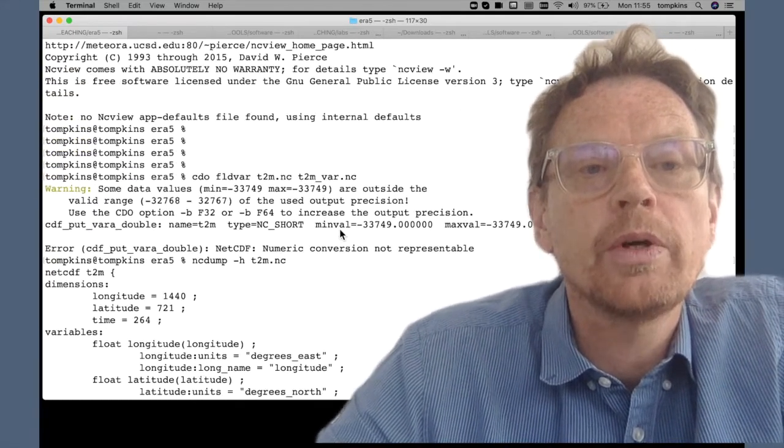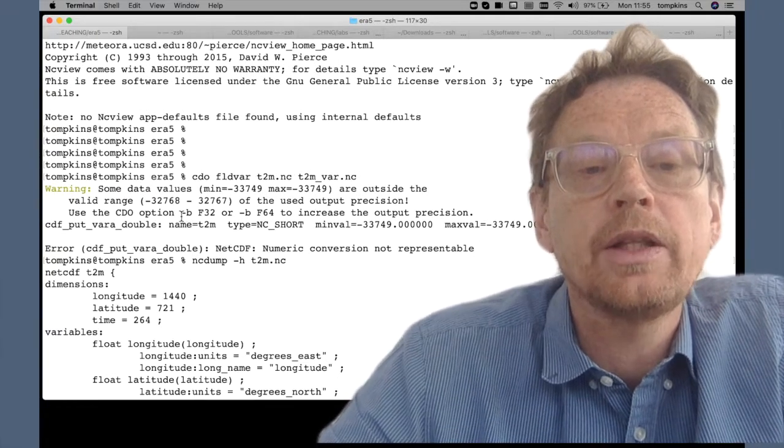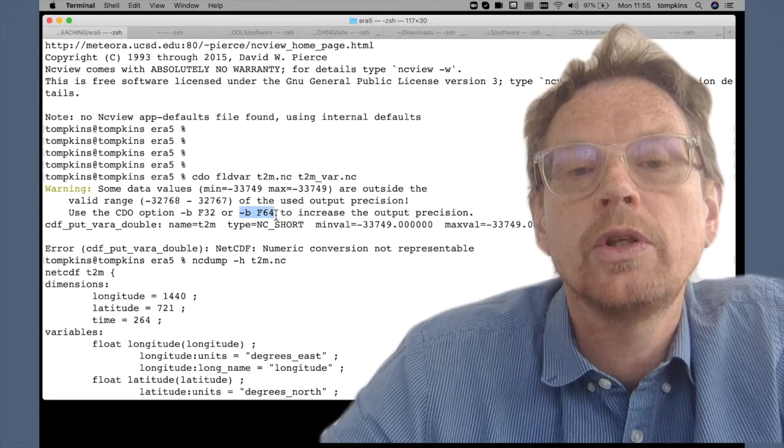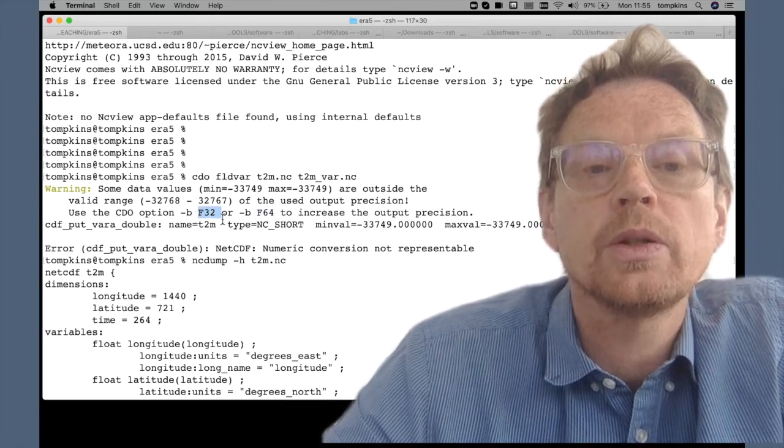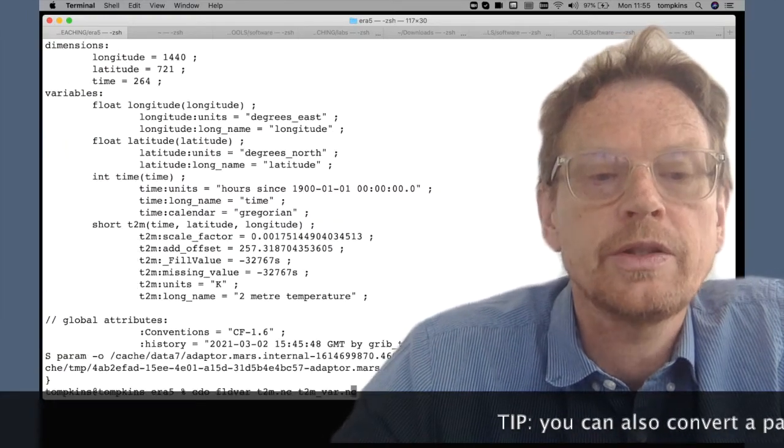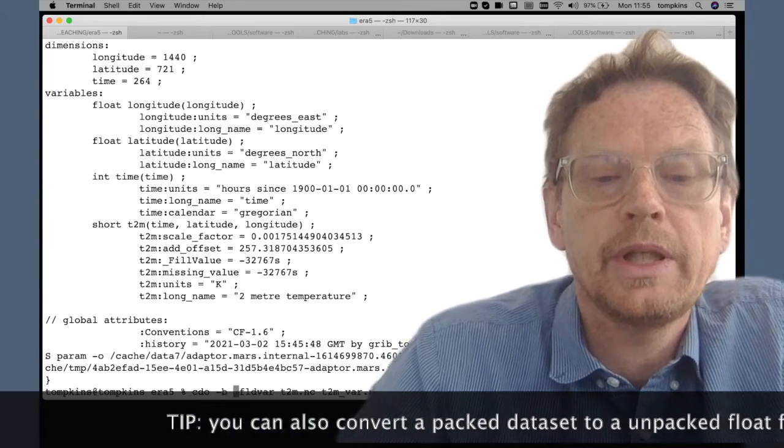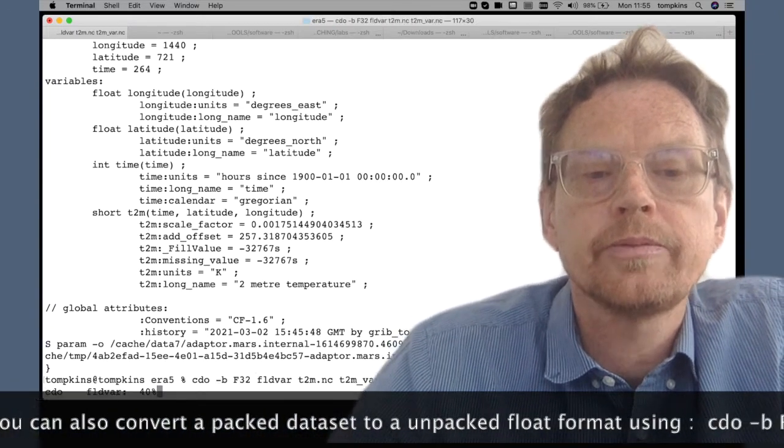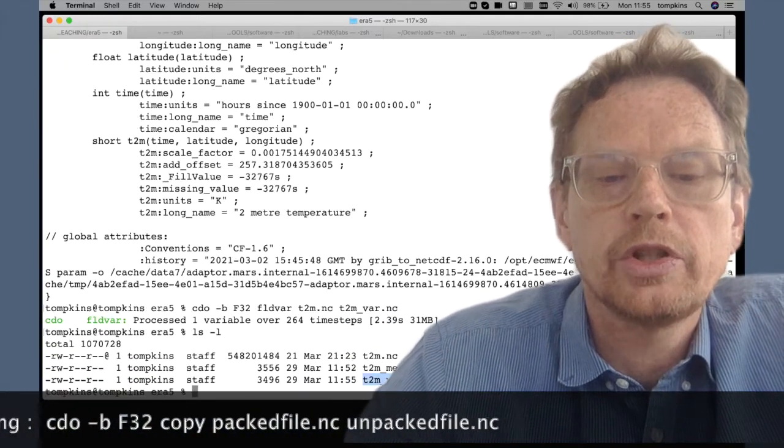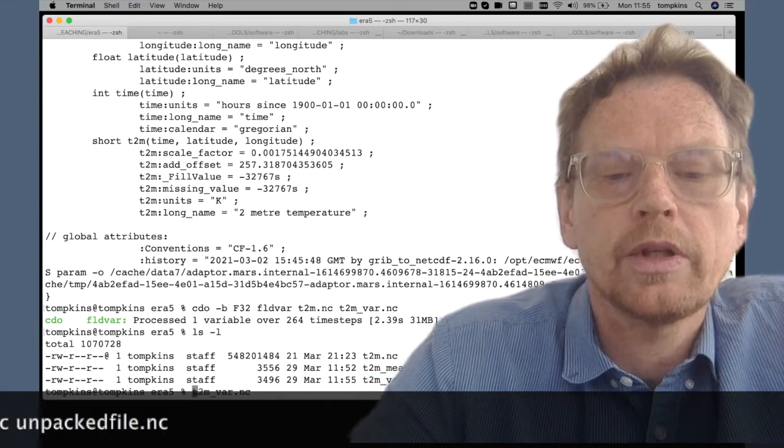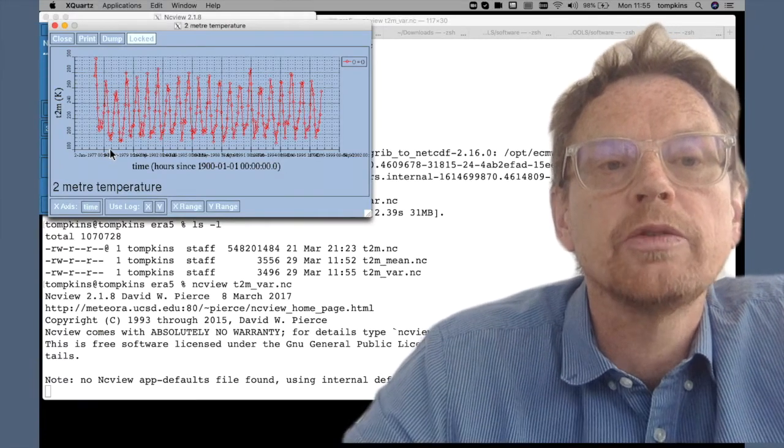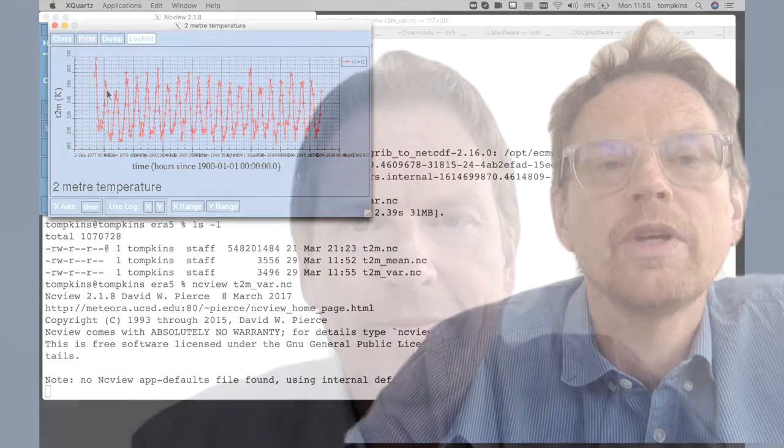But we saw what the solution was up here. We can add the option minus B f32 or minus B f64 to turn it into a 4 byte or an 8 byte double precision output. So let's just add that, minus B f32. The function now works and we have another file which tells us what the variance is. nc view t2m and here we have the spatial variance. Of course for a global field these values are very large.